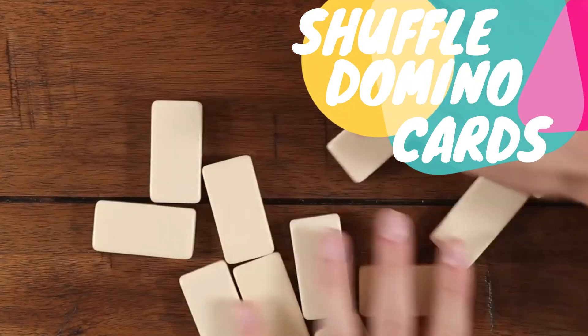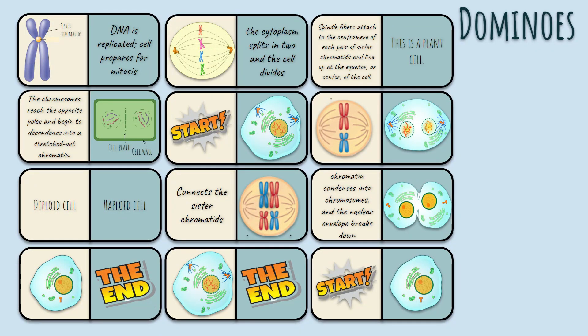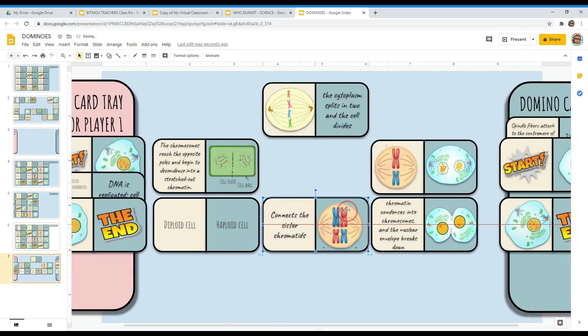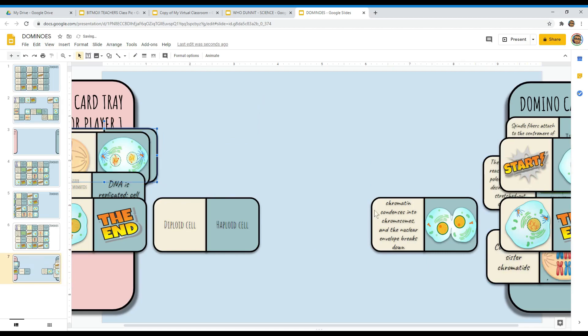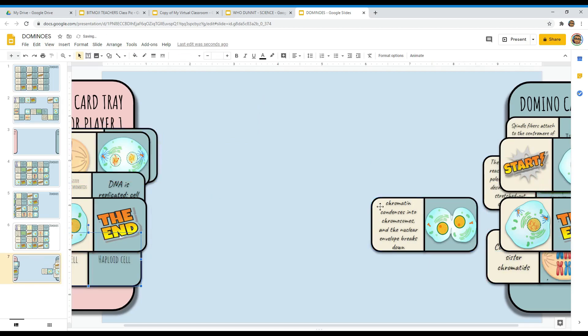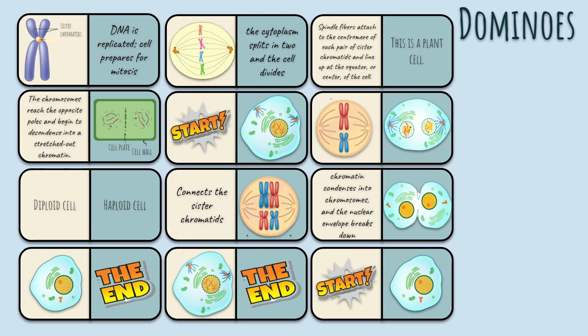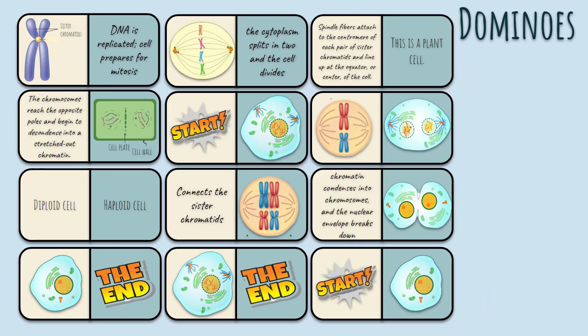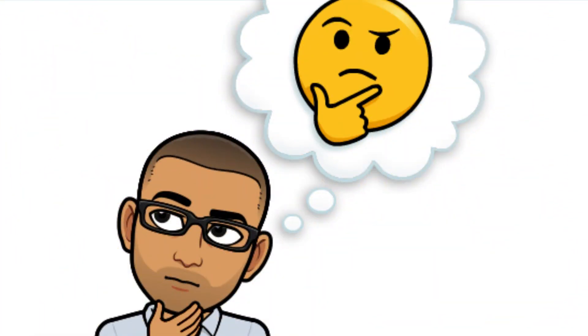I'm sure some of you already have an idea what game I'm talking about — yes, you got it right: dominoes! Like the usual dominoes game rule, you begin by shuffling the domino cards, but instead of placing them face down you keep them face up. Pair up students; each student alternately grabs one start domino and one end domino, then split all remaining dominoes equally. Use rock-paper-scissors to decide who goes first. For this example, I use stages of mitosis and some vocabulary words, which is a biology lesson.